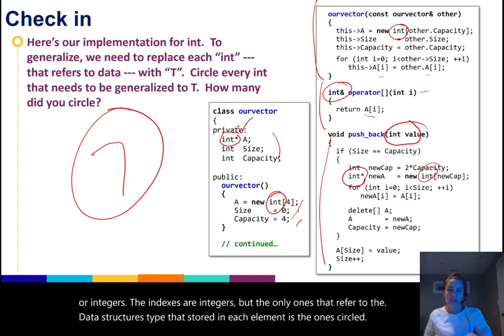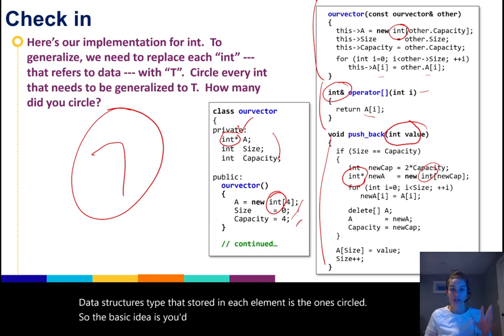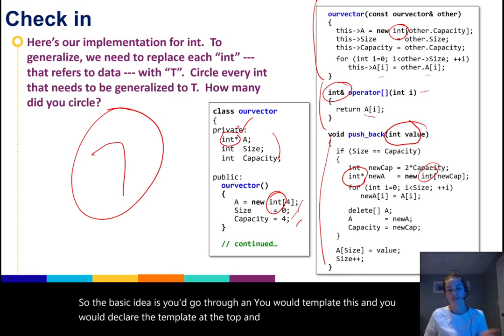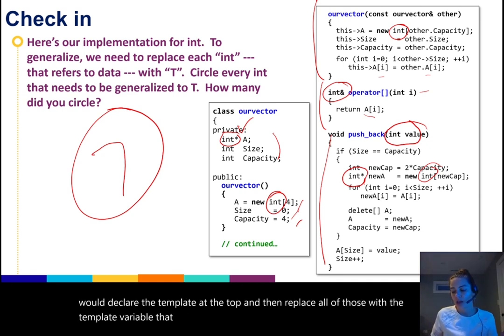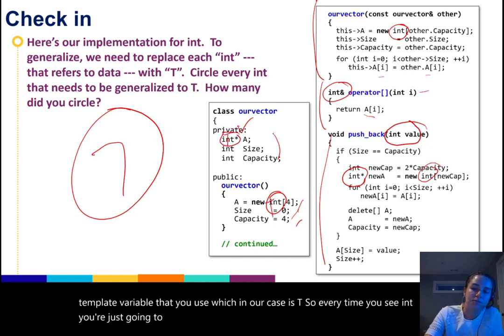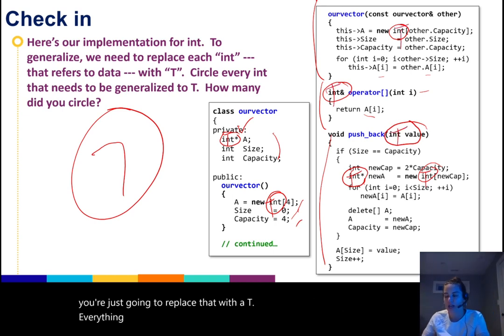So the basic idea is you'd go through and you would template this, and you would declare the template at the top, and then replace all of those with the template variable that you use, which in our case is T. So every time you see int, you're just going to replace that with a T. Everything else is the same. The pointers would stay and the references would stay, but you'd replace int with a T.